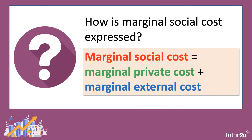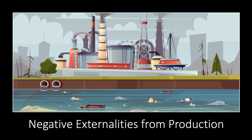It's very easy for students to confuse social cost with external cost — this is a common error in multiple choice questions on this topic. Be careful: social cost equals private cost plus external cost. In the next video we're going to look at some examples of negative externalities from production and from consumption.